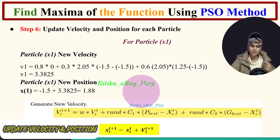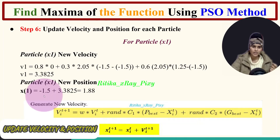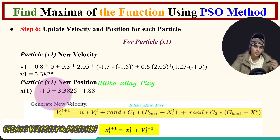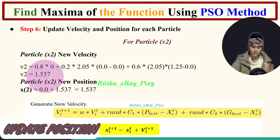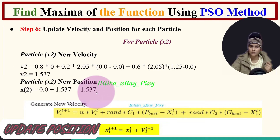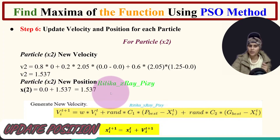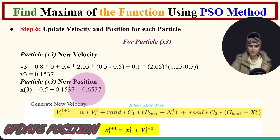We update the new position for particle 1 by adding the new velocity to the old position: -1.5 + 3.3825 = 1.88. For particle 2 (position = 0.0), we put the values in and get velocity = 1.537. The new position for particle 2 is 0.0 + 1.537 = 1.537.